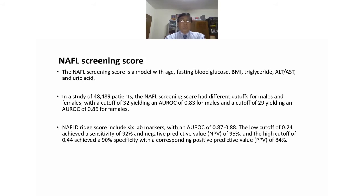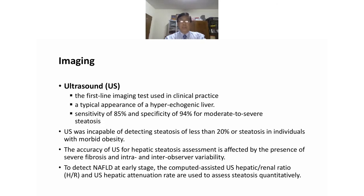For imaging techniques, ultrasound is a first-line imaging test used in clinical practice. A typical appearance is a hyperechogenic liver with sensitivity of 85% and specificity of 94% for moderate to severe steatosis. Ultrasound is inapplicable for detecting steatosis of less than 20% in individuals with morbid obesity. The accuracy of ultrasound for hepatic steatosis assessment is affected by the presence of severe fibrosis and intra- and inter-observer variability. To detect NAFLD in early stages, computer-assisted ultrasound or the hepatic-renal ratio and hepatic attenuation rates are used to quantitatively assess steatosis.